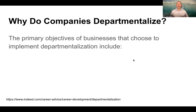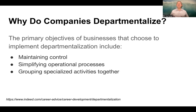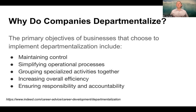So why do companies departmentalize? The primary objective of a business is to choose and implement the departmentalization that could include maintaining control — I want to control how my actual business gets done. I want to simplify operational processes, group specialized activities together, increase overall efficiency, and ensure responsibility and accountability. By grouping things together that make sense, I can make sure I have a better degree of control and hold accountability to the individuals responsible for that particular work.